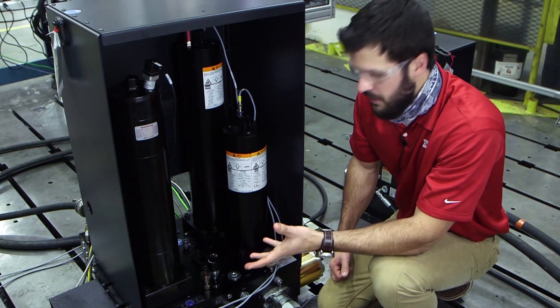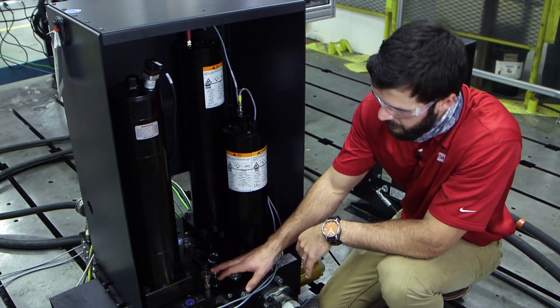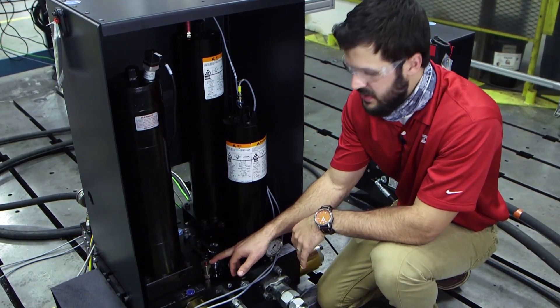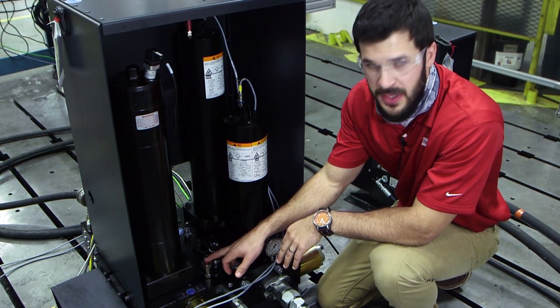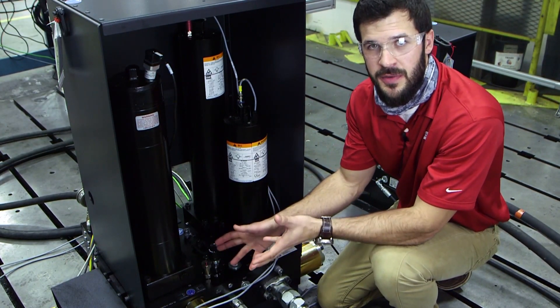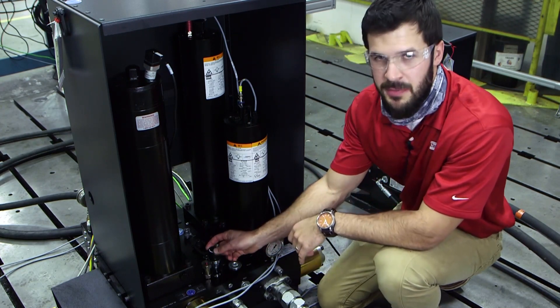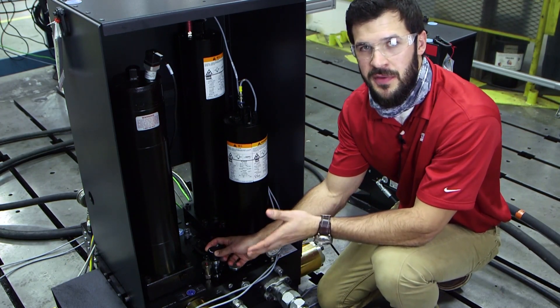What else is nice about the 295 HSM is you have a safety indicator right here that is telling me that there is pressure in this manifold. To get rid of this pressure before you crack a fitting or service this, you can just turn this manual dump valve. Then you know it's safe to work on.